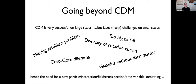The question I want to address is: do we really need to go beyond cold dark matter because the data tell us to, or just because we're not happy with CDM? Exploring new models is wonderful — I myself work on fuzzy dark matter — but the key question is whether the data actually require us to move beyond cold dark matter.